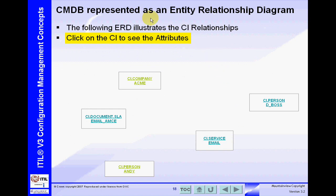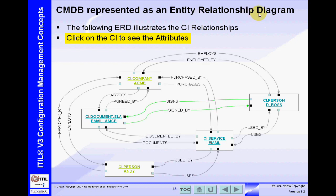We're going to represent the CMDB in the form of an entity relationship diagram. Those of you with a database background will be very familiar with this. It's a way of representing records, or CIs — configuration items — within the CMDB. These records have relationships between each other, and those relationships should be bi-directional. We should know how to get from one record to another and then back to the related record.